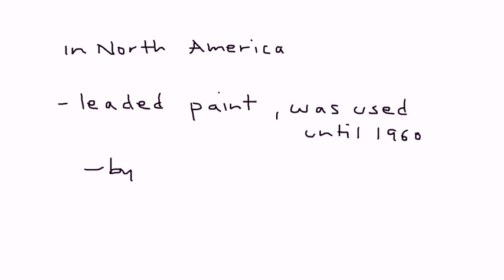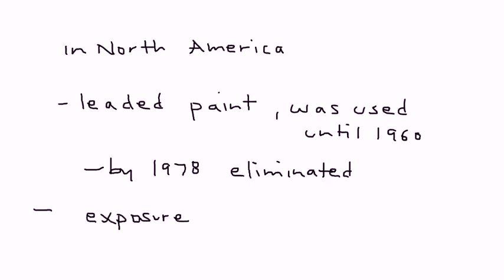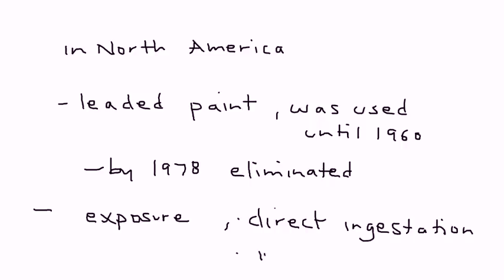By 1978, most homes in North America had eliminated the use of lead paint. But a child or even an adult can still get exposure to this lead when they either directly ingest it — like little kids who pick up pieces of paint that come off the walls — or if you are working in an environment where lead paint particles are in the air, you can also, over time, develop lead poisoning.